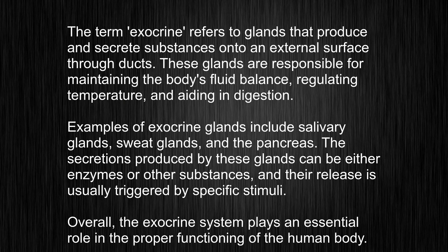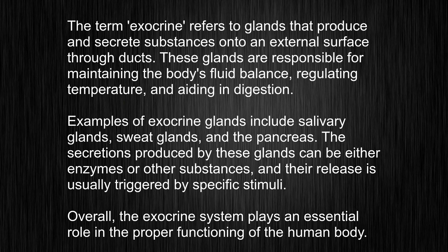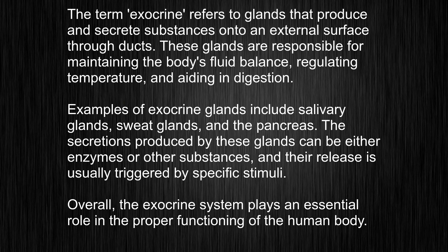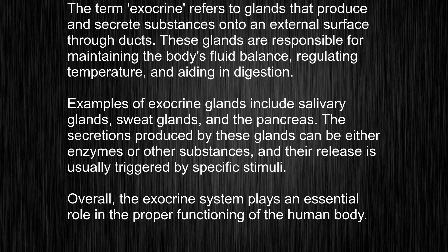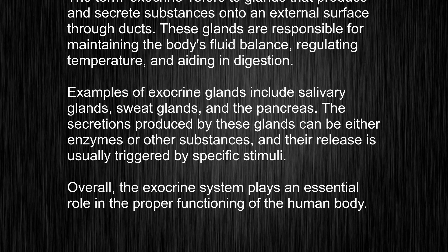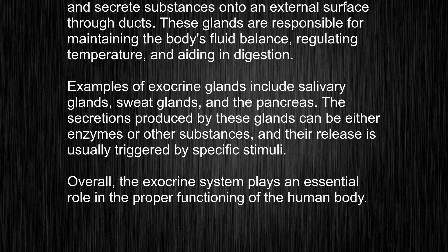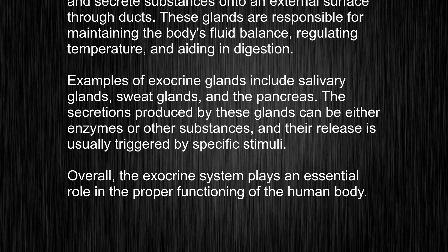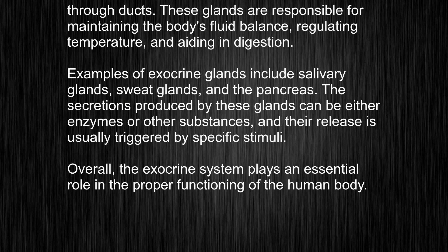Examples of exocrine glands include salivary glands, sweat glands, and the pancreas. The secretions produced by these glands can be either enzymes or other substances, and their release is usually triggered by specific stimuli. Overall, the exocrine system plays an essential role in the proper functioning of the human body.